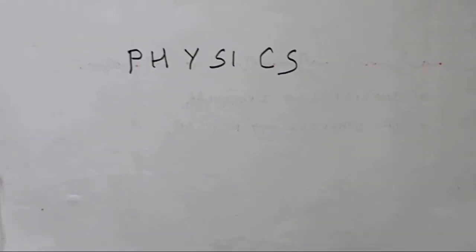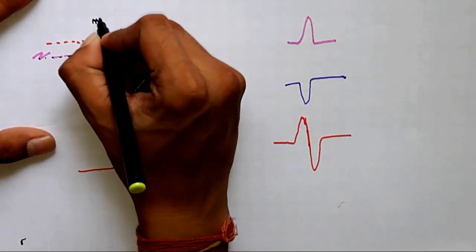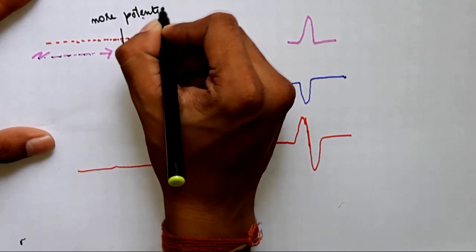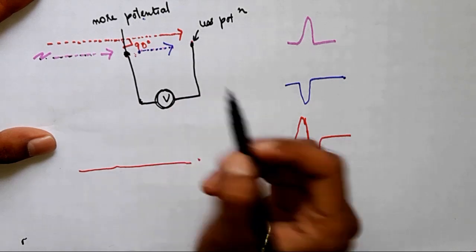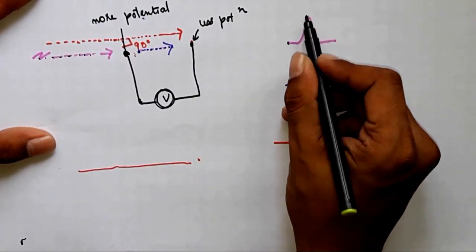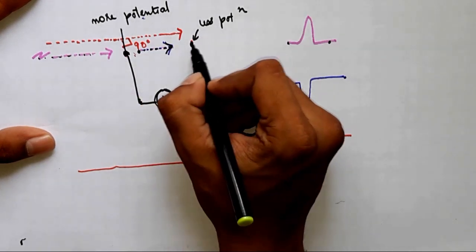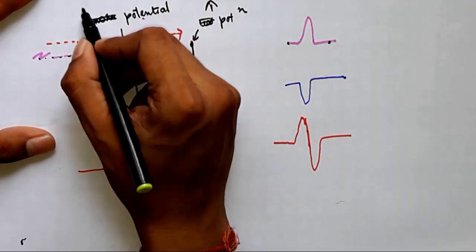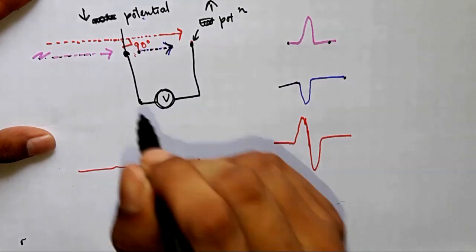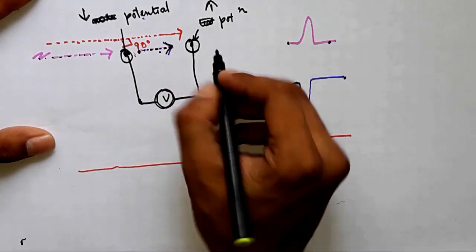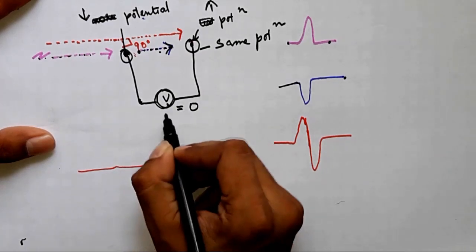When a wave travels towards a pole, the voltage at that point increases relative to the other pole, giving a positive deflection. When electricity moves away from a point, the polarity reverses, giving a negative deflection. When the wave moves perpendicular, both points reach the same potential simultaneously, so the potential difference is zero and the voltmeter shows a straight line.